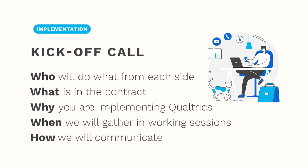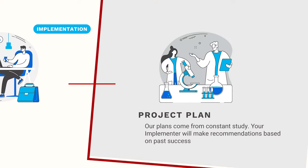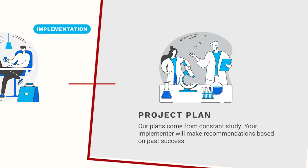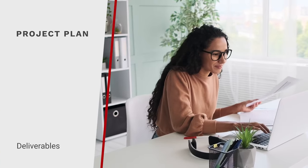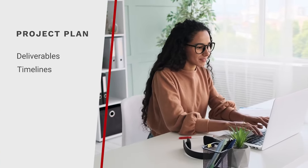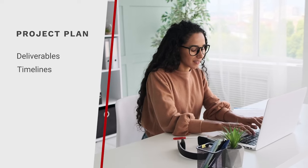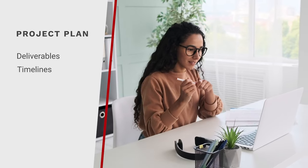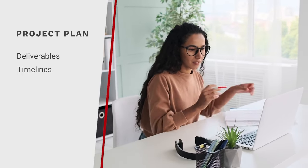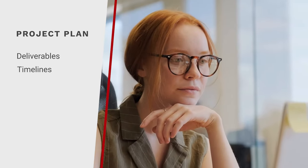During the kickoff call, you and your implementer will develop a written project plan. Our team starts with a template built from insights captured over thousands of Qualtrics projects, and your implementer will make recommendations based on the success of projects similar to yours. These best practices include standard deliverables and timelines, but your implementer will also review the business impact you're hoping to achieve and your specific timeline constraints to customize the project plan to best match your objectives.